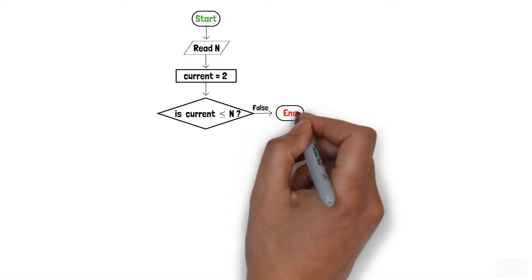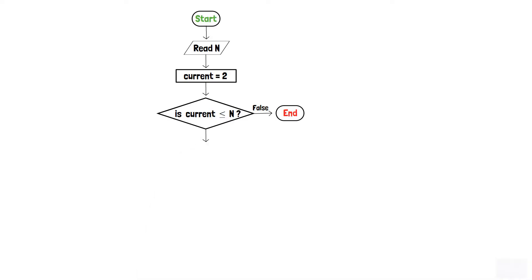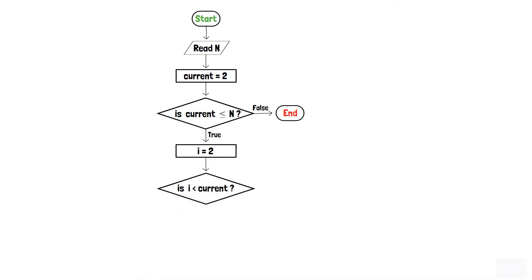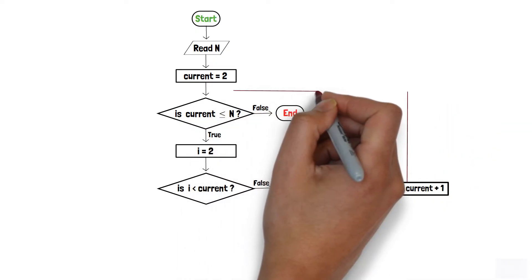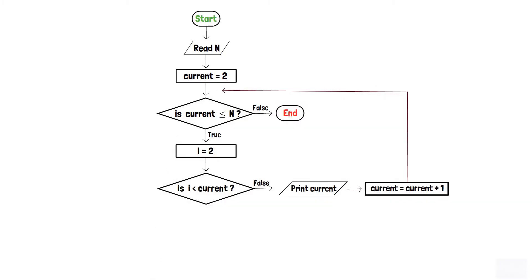If not, that means variable current has exceeded the upper limit n, and hence we will terminate the program through the end terminator. But if the condition is true, that is if current is less than or equal to n, then a new variable i is declared and assigned the value 2 via a process box. A second decision box checks whether i is less than current or not. If i is not less than current, then current is not divisible by any other number except 1 and itself, so current is prime and is printed. Current is then incremented by 1 and a loop routes back to the first decision box.